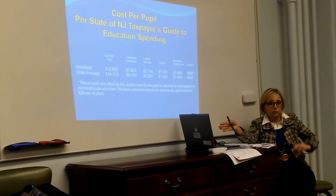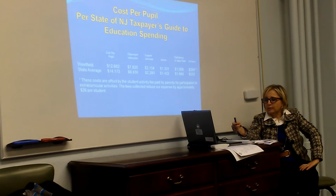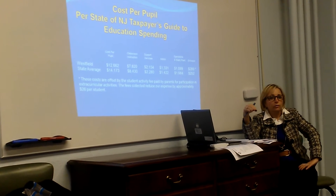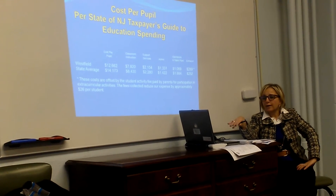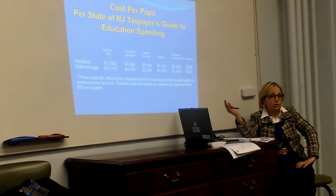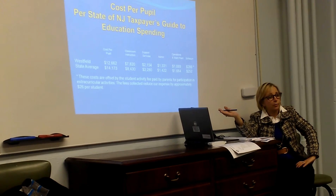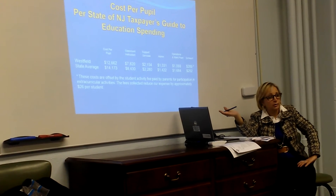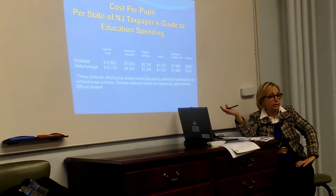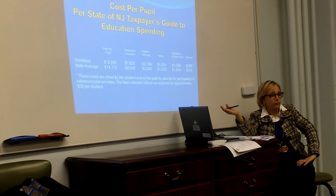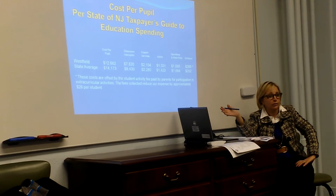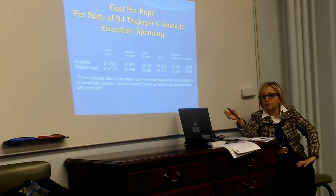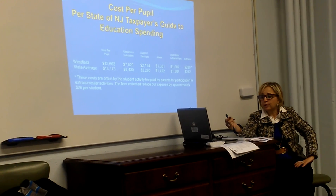What's left is called the budgetary cost per pupil. The state will calculate it for every district and then publish it based on comparable districts and size. For instance, we're in the 3,501 and above K-12 category, so that's what we're compared to.